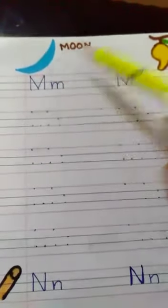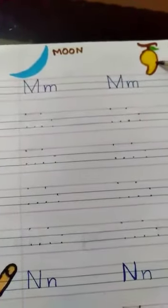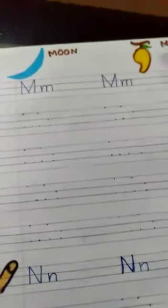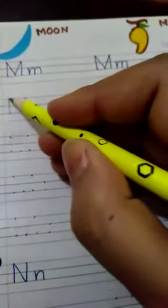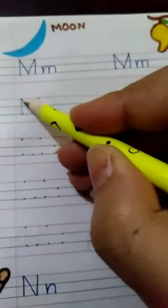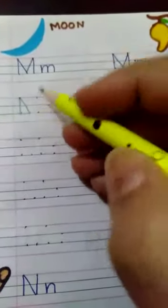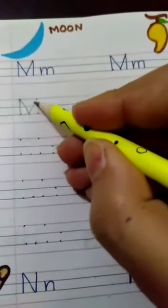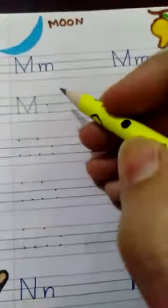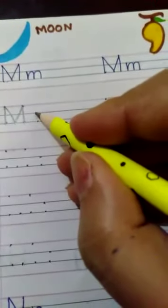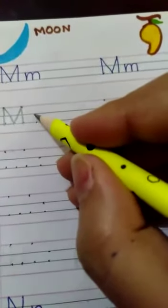Moon. M. Mango. Let us learn how we will make M. Standing line, slanting line, slanting line, and one more standing line. M. This is M and this is M.